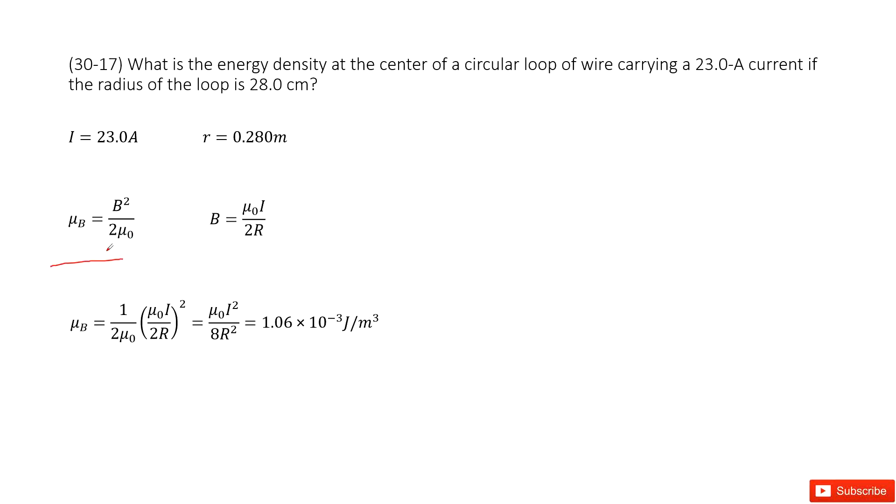So this is the magnetic energy density: μ_B = B²/(2μ₀). μ₀ is a constant, and B is the magnetic field density at this point.